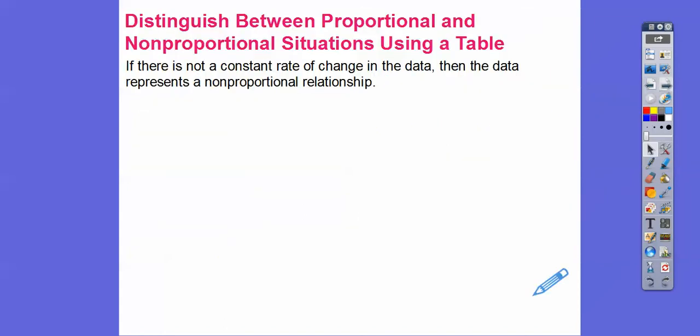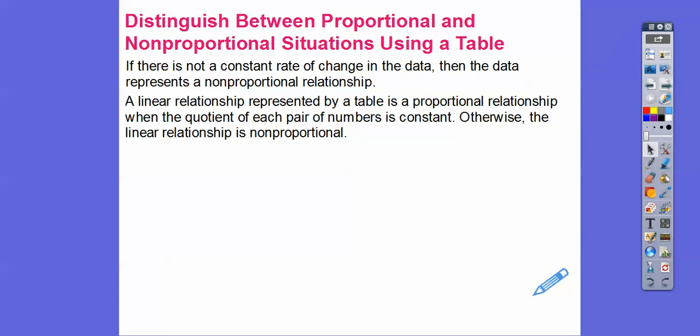If there's not a constant rate of change, then the data represents a non-proportional relationship. A linear relationship represented by a table will be proportional when the quotients of each pair of numbers is the same or constant. Otherwise, that linear relationship is non-proportional. That just means for each y divided by x, it has the same value, and if it does, then it's proportional.